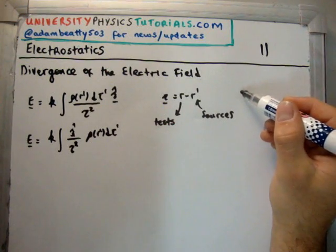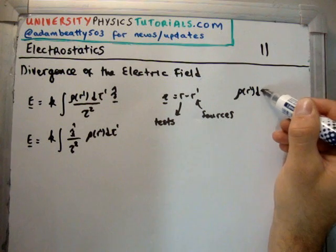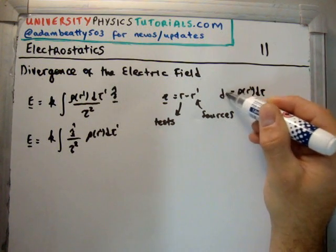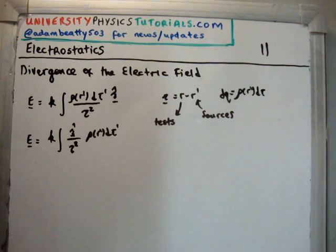Note, by the way, that ρ of r prime d tau prime is just equal to dq, the infinitesimal charge element.